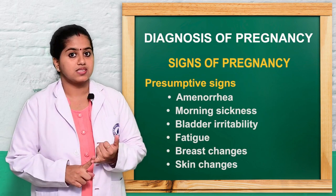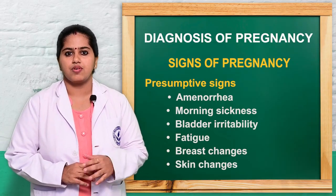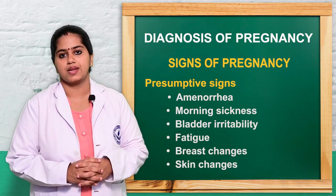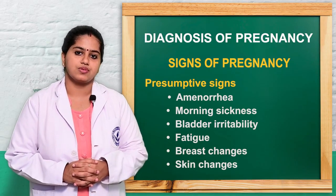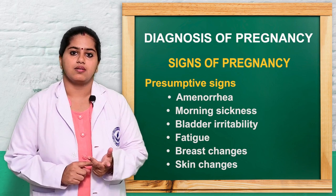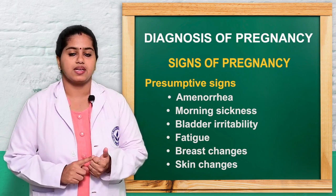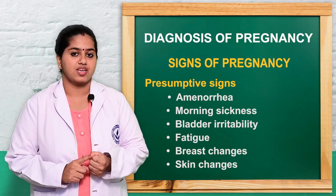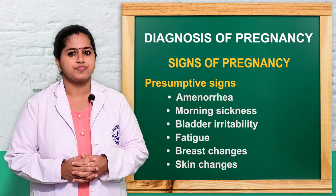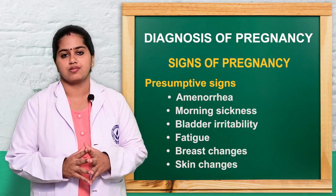Presumptive signs are early signs of pregnancy, but they do not confirm pregnancy on their own. Presumptive signs include amenorrhea, morning sickness, bladder irritability, fatigue, breast changes, and skin changes.